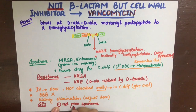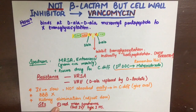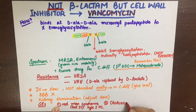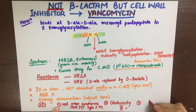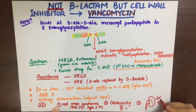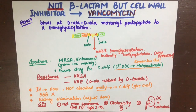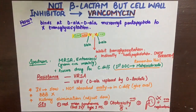Red man syndrome due to histamine release leads to cutaneous vasodilation, causing flushing, fever, chills, tachycardia, and hypotension — essentially a shock-like state. Vancomycin can also cause ototoxicity, which is additive with other ototoxic drugs and is sometimes permanent. It can also cause additive nephrotoxicity with other nephrotoxic drugs, though by itself it doesn't cause that much nephrotoxicity.